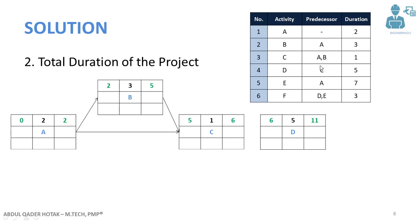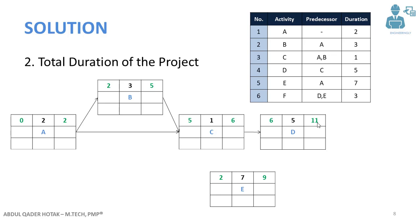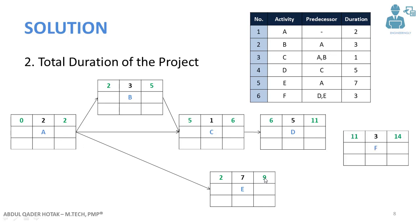Activity D has its predecessor as activity C. The duration of activity D is 5 days. The earliest we can start is day 6, which added to its duration gives an early finish of day 11. For activity E, whose predecessor is only activity A: activity A ends on day 2, so activity E can start on day 2, and its early finish will be day 9.